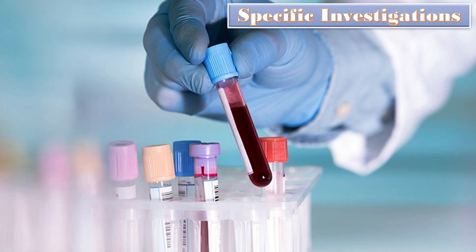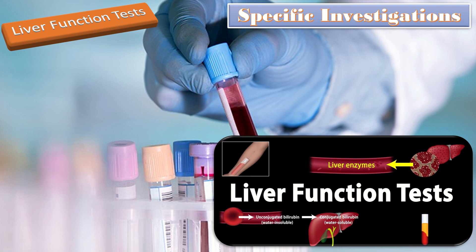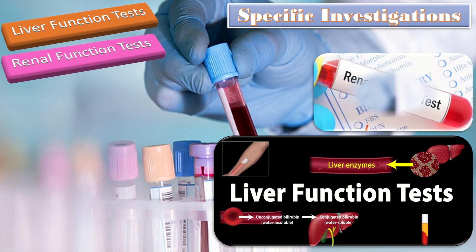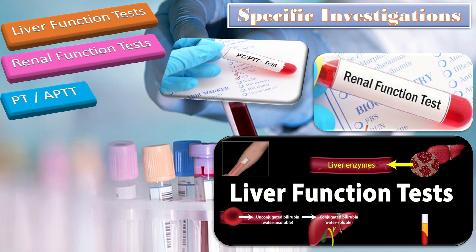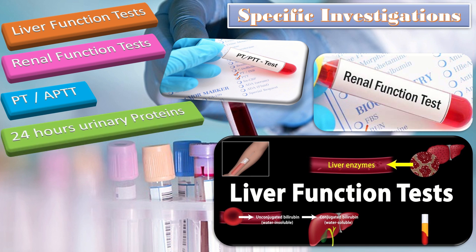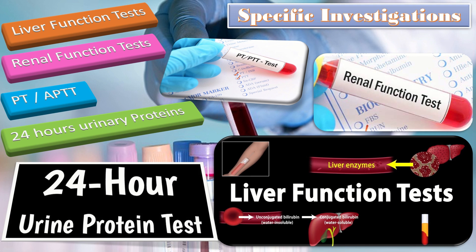Among specific investigations, the first and most important is liver function tests, including serum bilirubin and ALT. ALT is specifically done as ALP is not of much importance in pregnancy. Next is renal function tests, including blood urea, serum creatinine, serum uric acid, and serum electrolytes. Coagulation profile including PT and PTT are done, especially if platelet count is decreased. For accurate diagnosis of preeclampsia, 24-hour urinary protein or albumin-creatinine or protein-creatinine ratio is performed as per the NICE guideline.